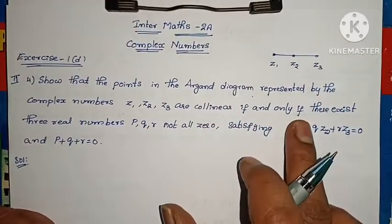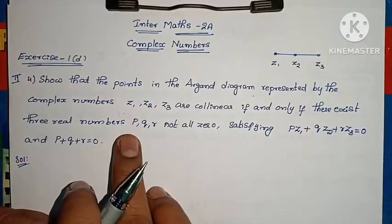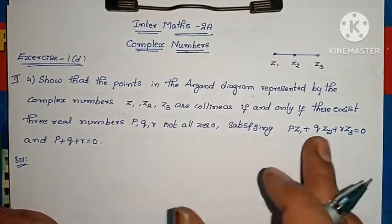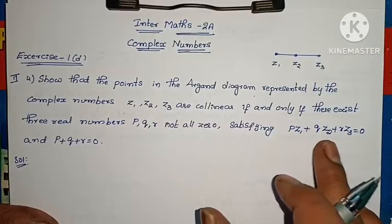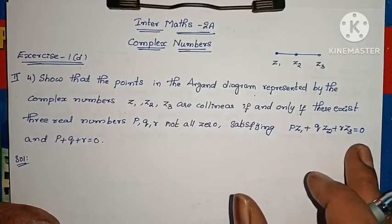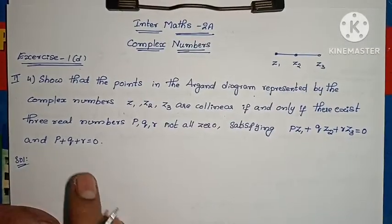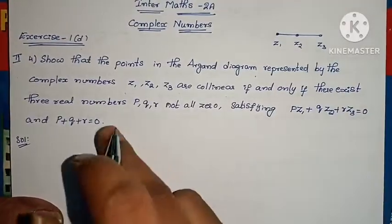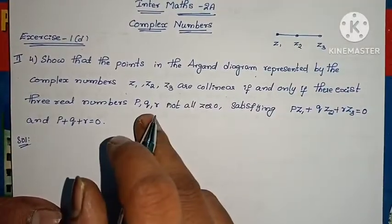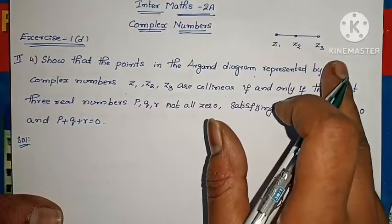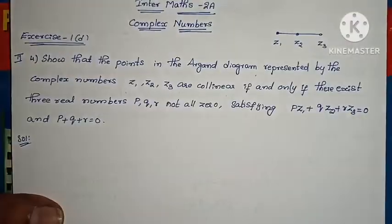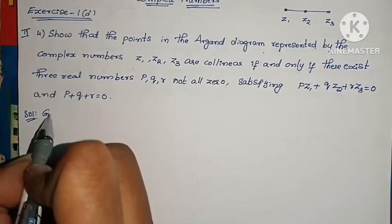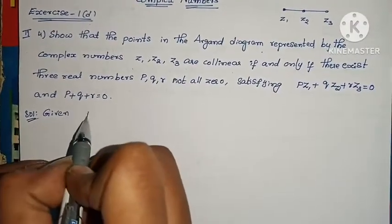Z1, Z2, Z3 are collinear if and only if there exist 3 real numbers P, Q, R — not all zero — satisfying PZ1 + QZ2 + RZ3 = 0 and P + Q + R = 0. When this condition is satisfied, Z1, Z2, Z3 are collinear.